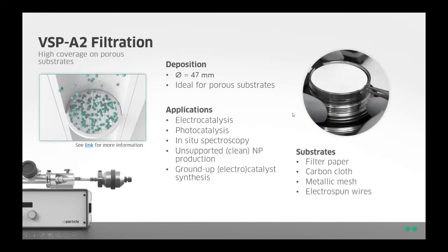The filtration unit is designed to handle standard 47mm diameter filters, but different porous substrates can be loaded. If the surface area of the filter you would like to use is smaller, there is also the opportunity to use different masks. Typical substrates include filter paper, carbon cloth, metallic mesh, or electrospun wires. Applications we see are electrocatalysis, photocatalysis, in-situ spectroscopy, unsupported nanoparticle production, and the ground-up production of catalysts.